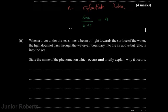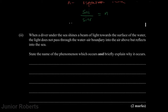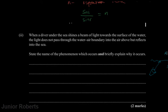Moving on — when a diver under the sea shines a beam of light towards the surface of the water, the light does not pass through the water-air boundary into the air above, but instead reflects back into the sea. Let's say this is the sea, and we have a flashlight shining a beam of light upward. Instead of passing through into the air, the ray of light is reflected back into the sea.